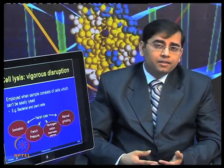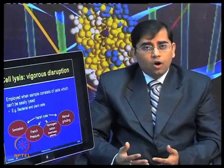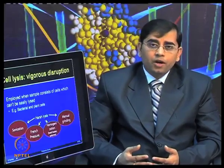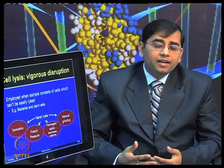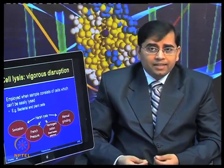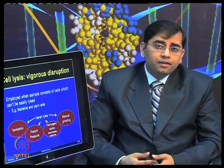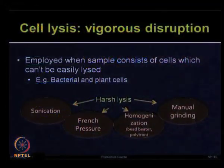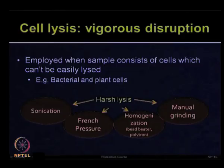Manual grinding is performed using mortar and pestle — it is often very efficient, but if you have very little sample, want to avoid contamination, or have samples that pose challenges with mortar and pestle, then you need to use electronic homogenizers. Sonication and French pressure are more commonly used for bacterial, yeast, or other cells that are difficult to open.